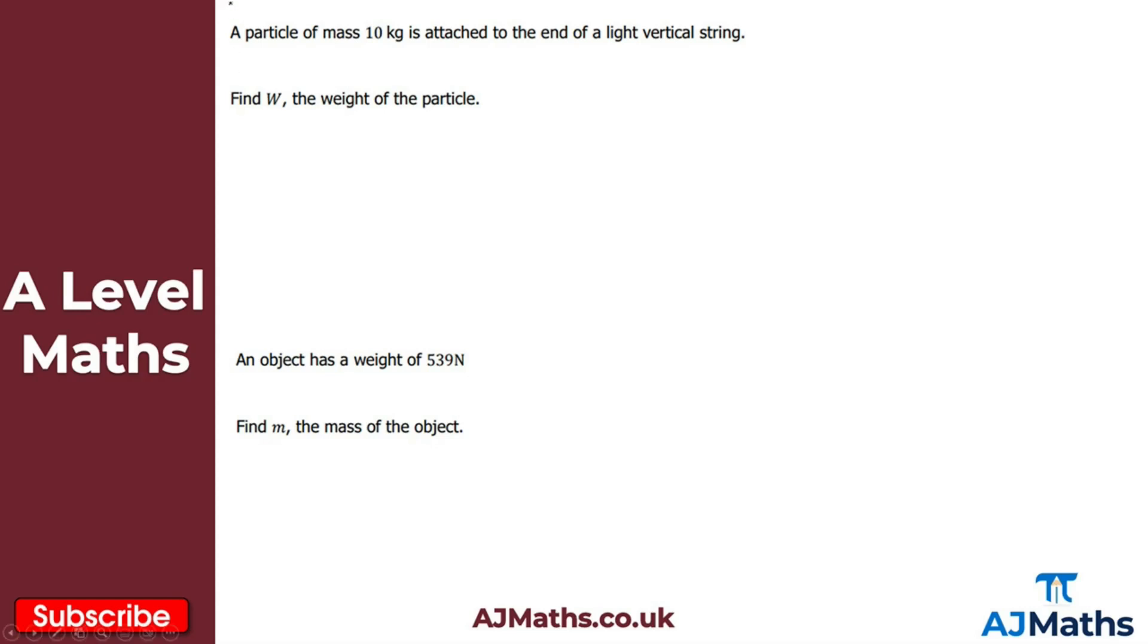So for the first question here we've got a particle of mass 10 kilograms. This is attached to the end of a light vertical string. We're asked to find W the weight of the particle. So to answer this question we need to make use of W is equal to mg here. Where m is the mass and g is the value of gravity here. That's going to be 9.8 meters per second per second there.